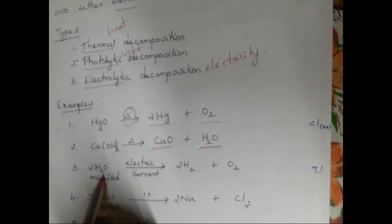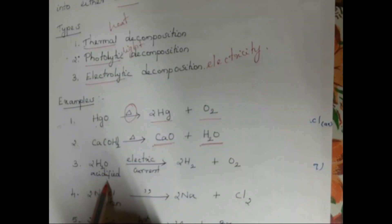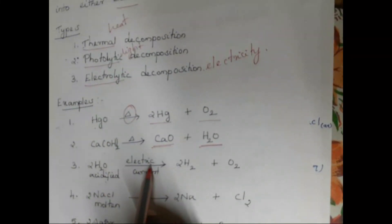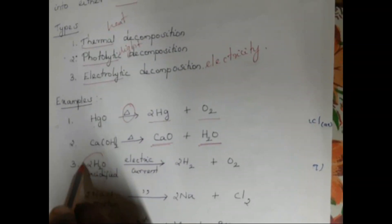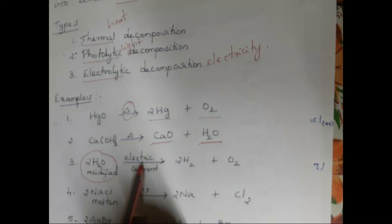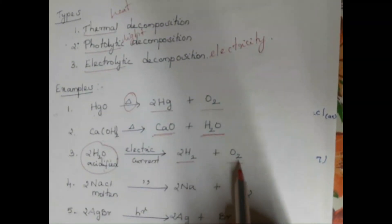The third example: we take acidified water. Acidified water is water mixed with a small amount of acid. We pass an electric current through it to break the water molecule. Since we are using electric current to break it down, this is called electrolytic decomposition. We get hydrogen and oxygen.